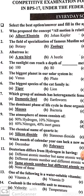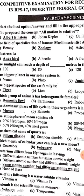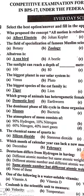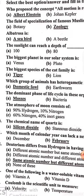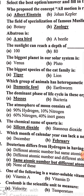The biggest planet in our solar system is Jupiter. The biggest species of the cat family is the tiger — tiger is the biggest species of the cat family.